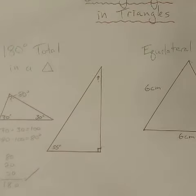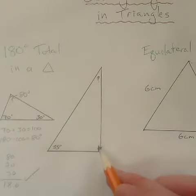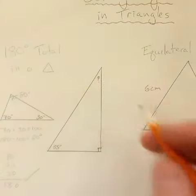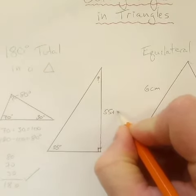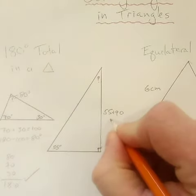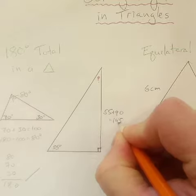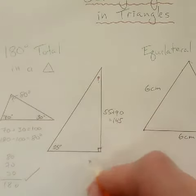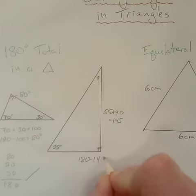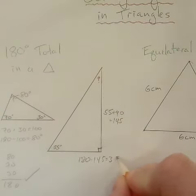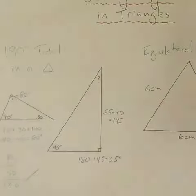Here's another one. We know this is 55. We know this is 90. What's our missing angle? Add 55 plus 90. We get 145. Now subtract that from 180 is 35 degrees. So our missing angle is 35 degrees.